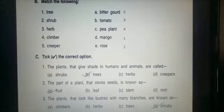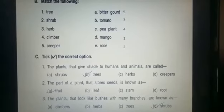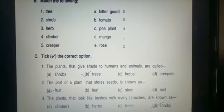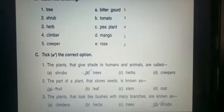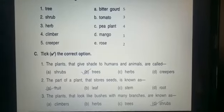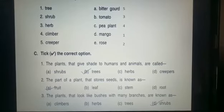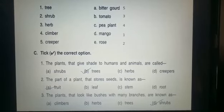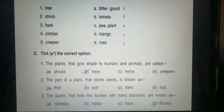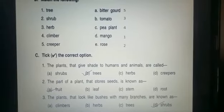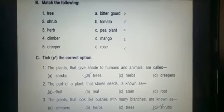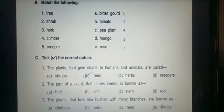Now part C — tick the correct option. The first one: the plant that gives shade to humans and animals are called — the answer is trees, so put a tick on B. The second: the part of a plant that stores seeds is known as — the answer is fruit, so put a tick on A. Third: the plants that look like bushes with many branches are known as — the answer is D, so put a tick on D, that is shrubs. Parts A, B, and C of our back exercise are now complete.